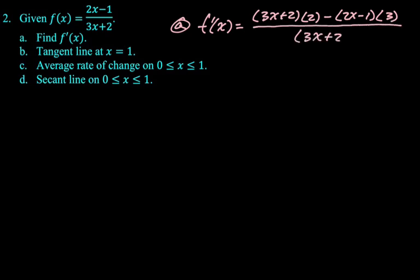And then if we clean this up, which you definitely should in a lot of cases, maybe not always, but in this case for sure, we get f prime of x is 7 over quantity 3x plus 2 squared. Alright, so that's part A.